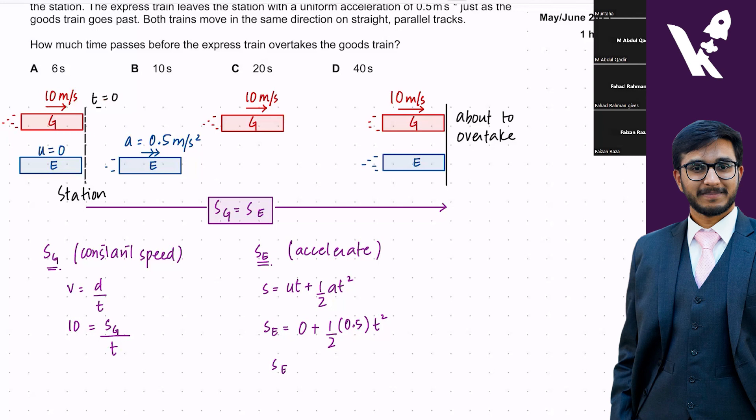Here T is the time value at overtake. The express train displacement is 0.25 T squared. Setting goods train displacement equal to express train displacement, we get 10T equals 0.5T squared, which gives 0.25T squared minus 10T equals zero.